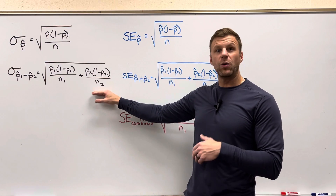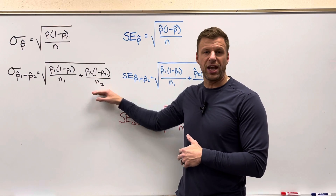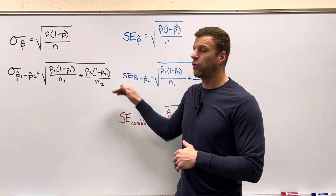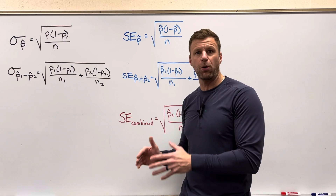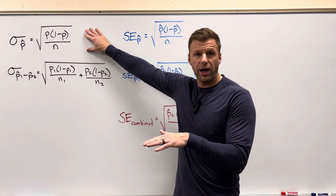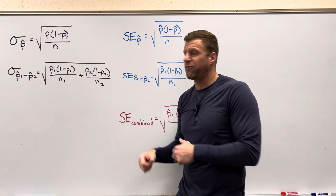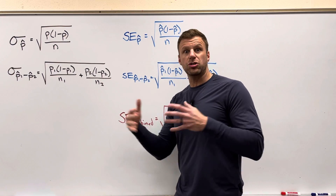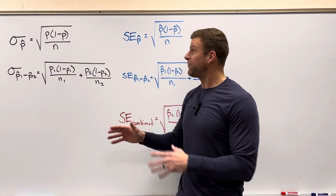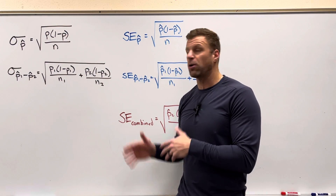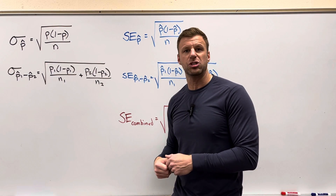When you're working with the difference between two sample proportions, this is the standard deviation. Now, look at these formulas — they require that you know the true population proportions. If you're working with just one population, P is the population proportion and you need to know it to use that formula. Here, we're working with two population proportions and you need to know both of them. So if you know the population proportions, these are the formulas to use to build that sampling distribution.